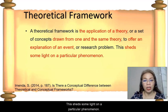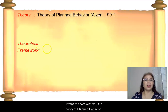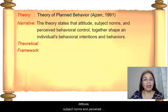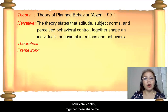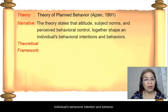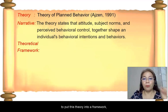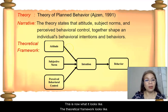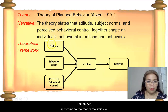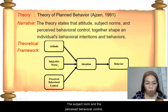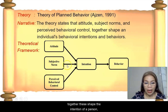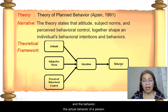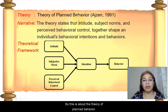To illustrate, for example, I will share with you the theory of planned behavior by Ajzen in 1991. According to this theory, attitude, subject norms, and perceived behavioral control together shape the individual's behavioral intention and behaviors. To put this theory into a framework, into a graphical presentation, this is now what it looks like. Remember, according to the theory, the attitude, the subject norm, and the perceived behavioral control together shape the behavioral intention of a person and the actual behavior of a person. So, this is about the theory of planned behavior.